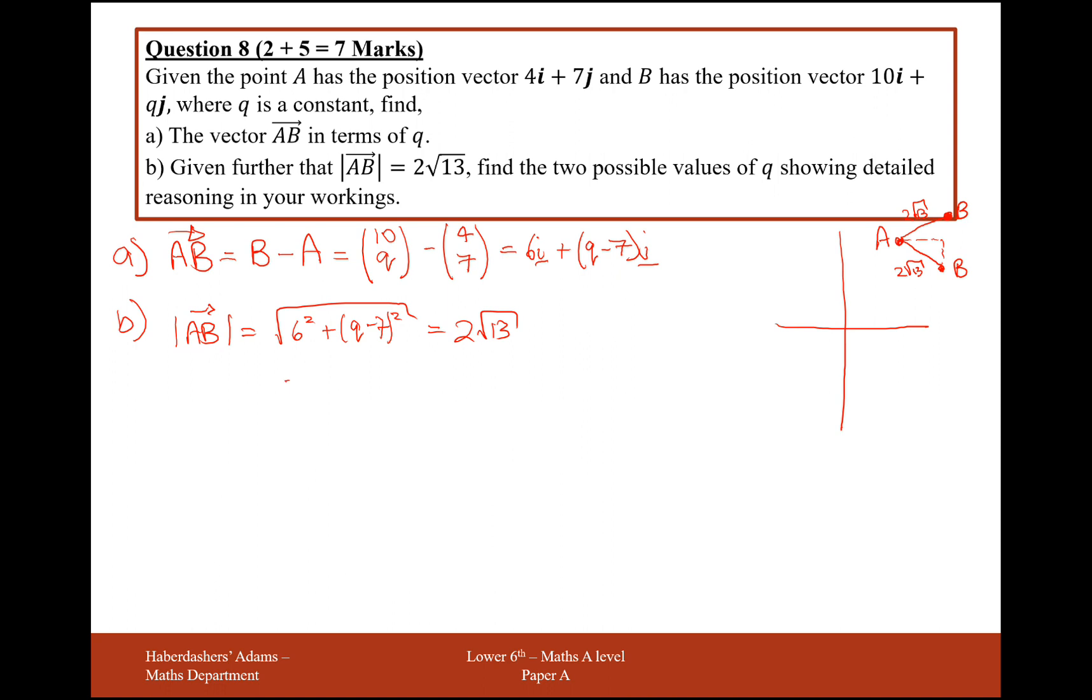So let's square both sides now. We're going to get 36, add q minus 7 squared, equals 4 times 13.